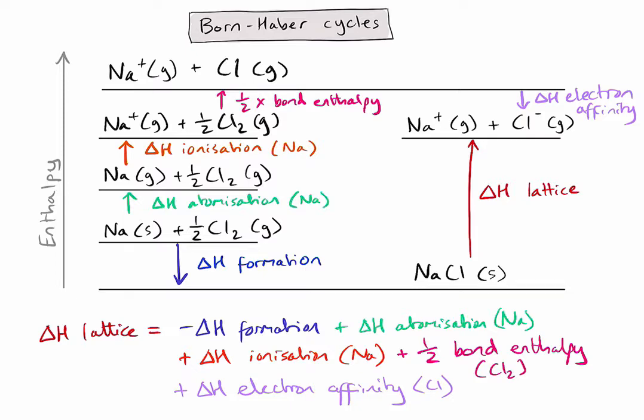The only things to watch out for in more complicated examples are when you need two ionization values to get to a 2+ ion, or perhaps two electron affinity values if you're forming a 2− ion. That is how we complete a Born-Haber cycle by applying Hess's law to find an alternative route. There are lots of key definitions and you might need to use the data booklet to find some of the values.